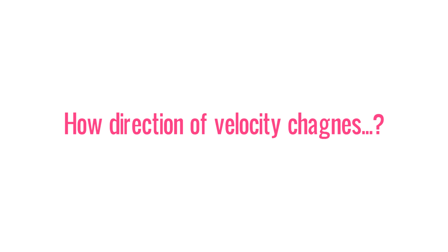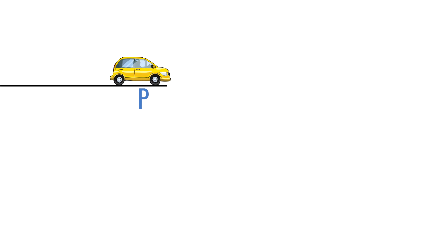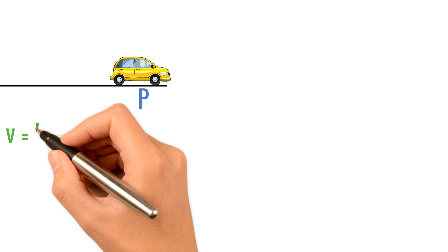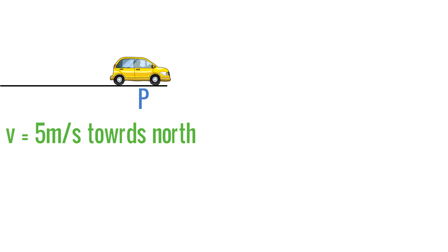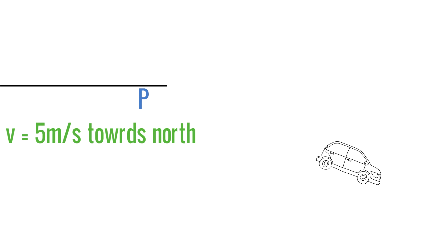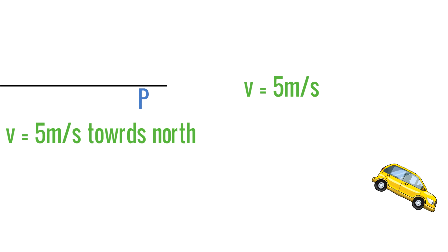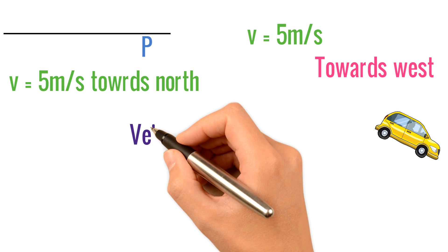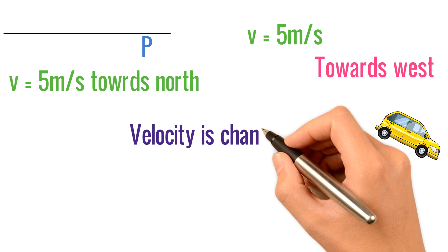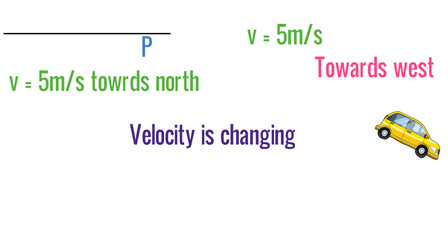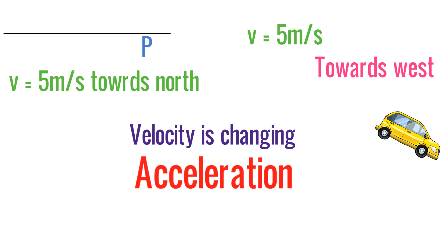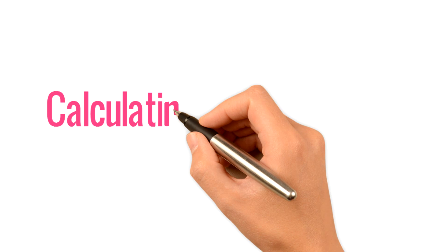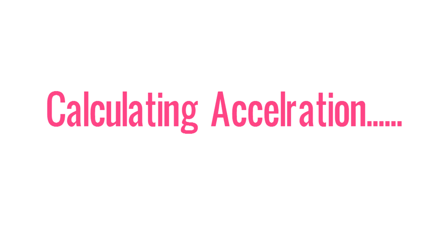Now let me tell you how direction of velocity changes. Consider a car moving to point P, and its velocity to point P is 5 meters per second towards north. If the car then moves from P to another point and its velocity is still 5 meters per second but the direction has changed to towards west, we say direction is changed, velocity is changing, and whenever velocity is changing the body is accelerating.